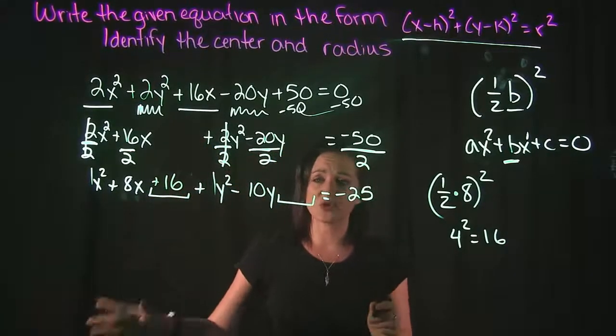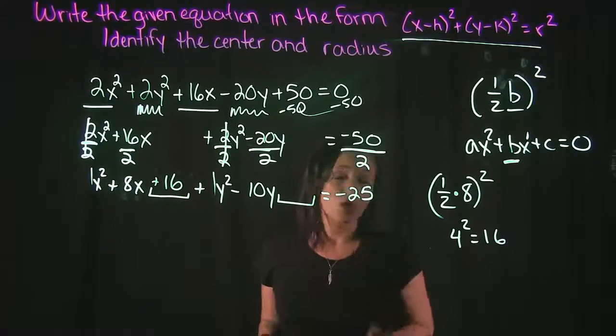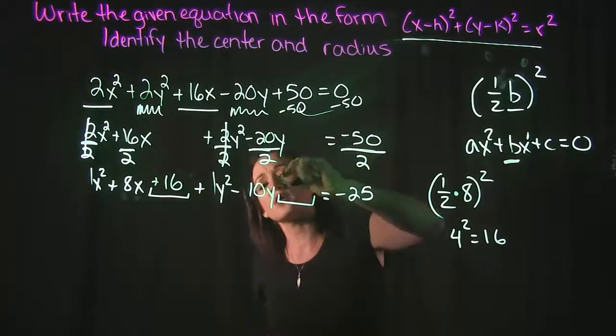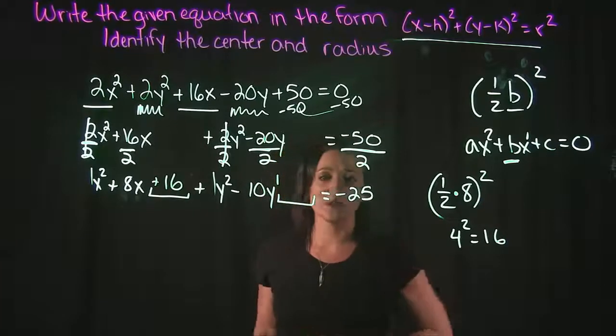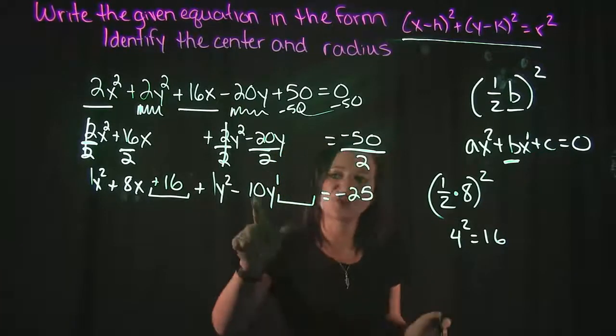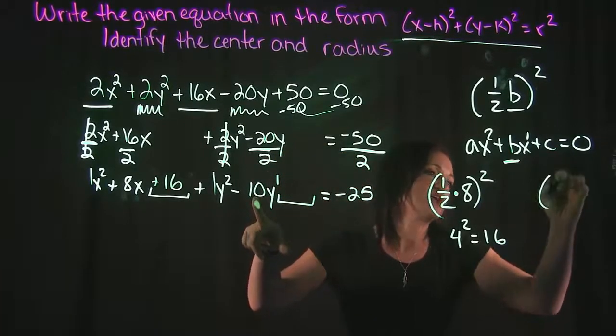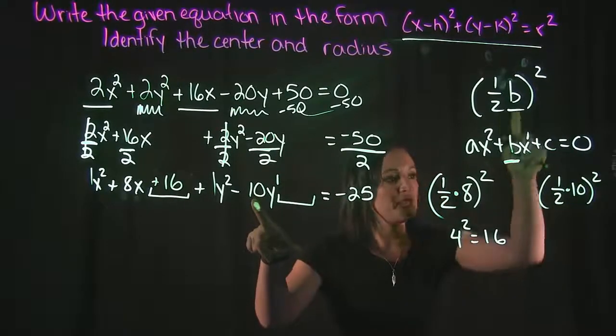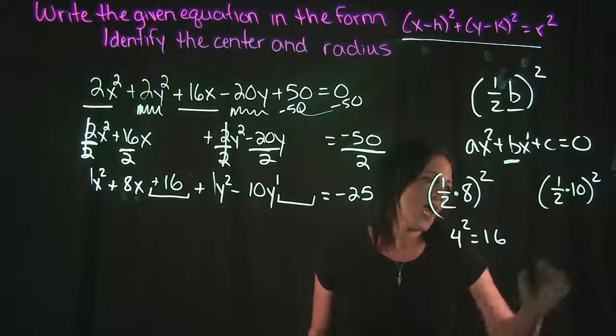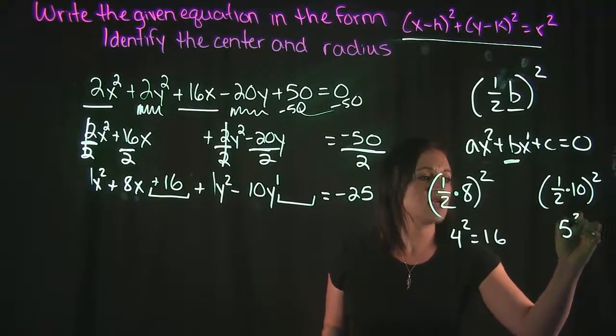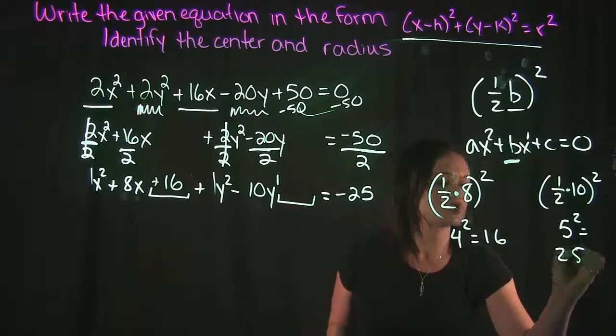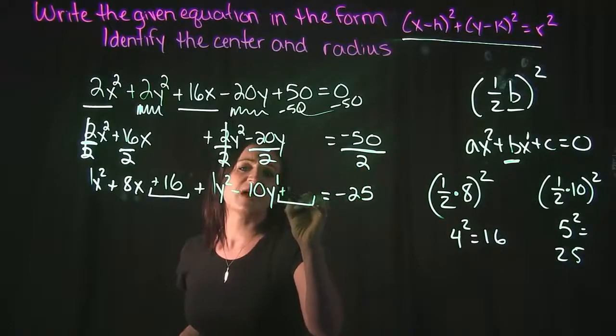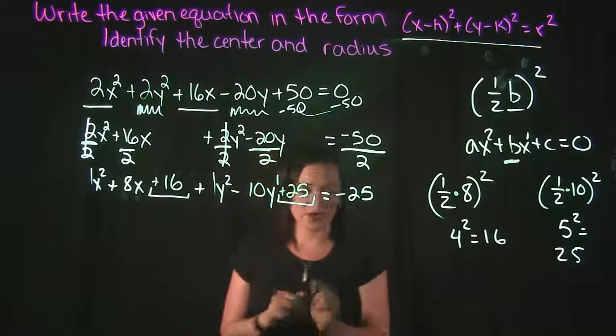For our y terms, find your y to the first power term. The coefficient for that is a 10. So I'm going to go through this equation, this little mini formula all over again. But this time, b is going to be 10. Half of 10 is 5 and 5² is 25. So 25 is going to be the magic number that I put in here.